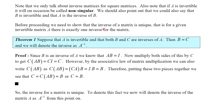Before proceeding, we need to show that the inverse of a matrix is unique. Note that we only talk about inverse matrices for square matrices. Also note that if A is invertible, it will on occasion be called non-singular. We can also say that B is invertible and that A is the inverse of B. The inverse of a matrix is in fact unique — that is, for a given invertible matrix A there is exactly one such inverse. This is a theorem we will prove. Suppose A is invertible and both B and C are inverses of A. We will show that B equals C, and the inverse will then be denoted A⁻¹.